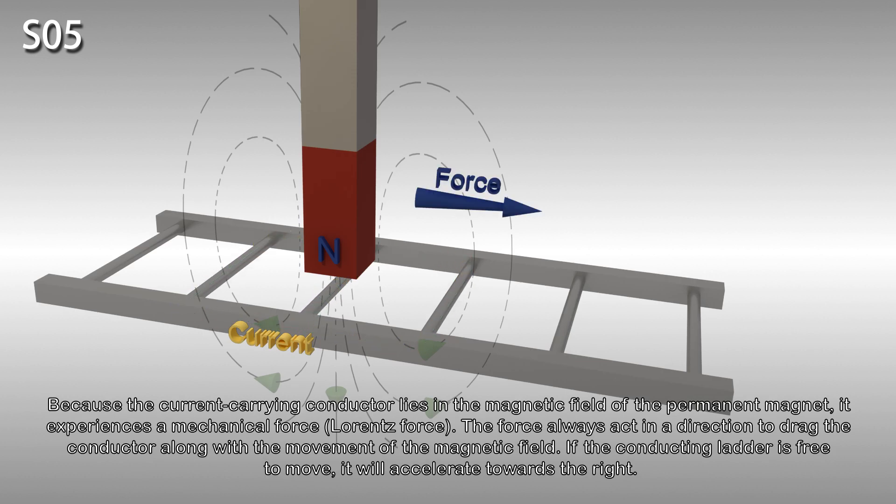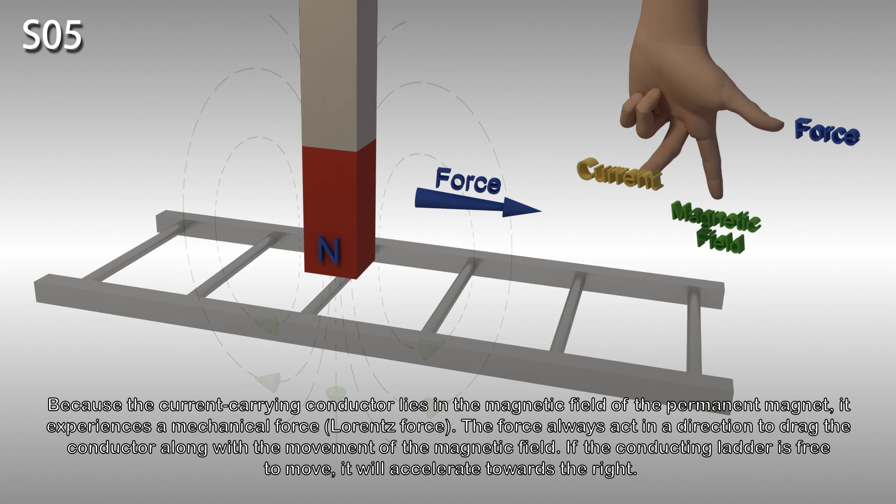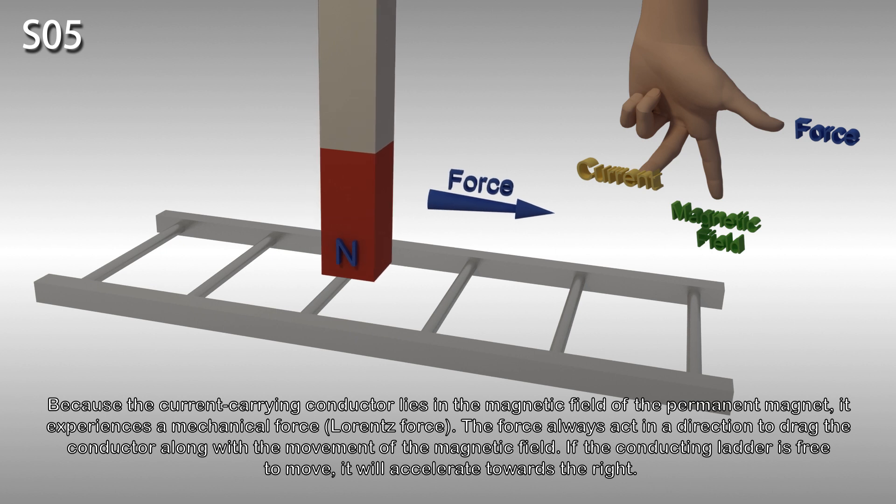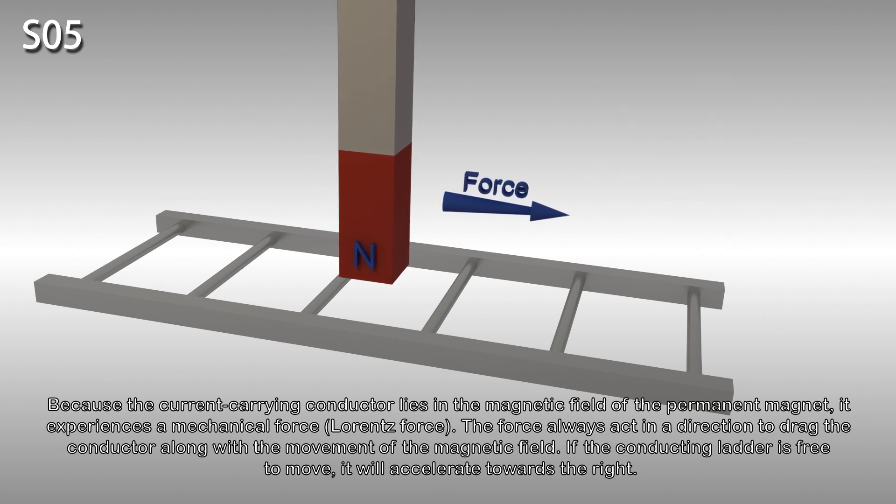Because the current carrying conductor lies in the magnetic field of the permanent magnet, it experiences a mechanical force known as the Lorentz force. The force always acts in a direction to drag the conductor along with the movement of the magnetic field. If the conducting ladder is free to move, it will accelerate towards the right.